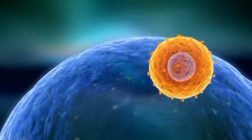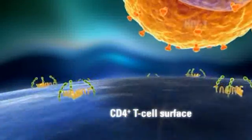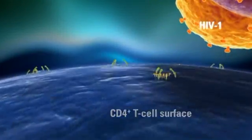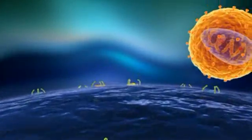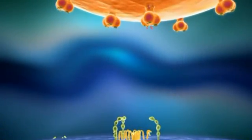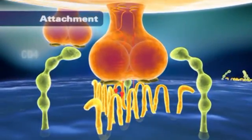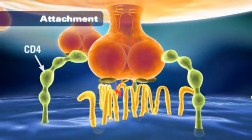Infection of the CD4 T cell by HIV occurs in three distinct sequential stages. In the first stage of the viral life cycle, known as attachment, the viral glycoprotein 120, or GP120, on the surface of the virus, binds to the CD4 receptor on the surface of the host cell.